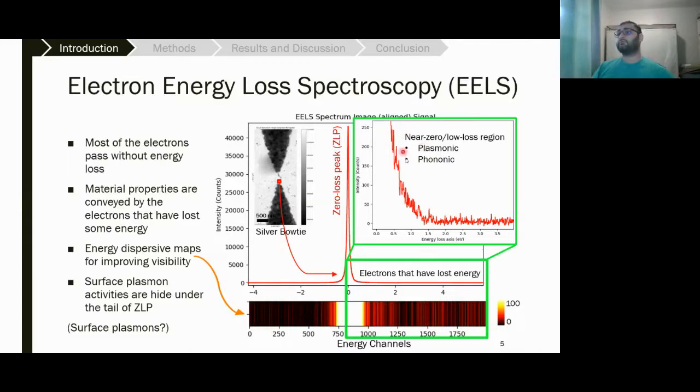The intensity is so high for these peaks. Most of the electrons passing through the sample are not actually conveying any physical information regarding the properties that we are looking at. But around this area are those electrons that are actually losing some energy and convey some meaningful information for us. As you can see, the count in this area is below 200 counts, while the zero loss peak has 40,000 counts.